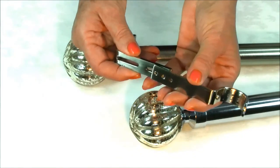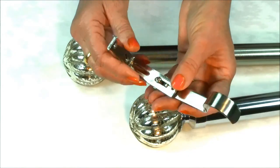The brackets are adjustable to give extra clearance, if required, between the wall and the curtain pole.